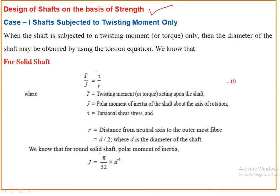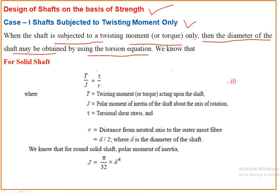The first design criteria is the design of shaft on the basis of strength — specifically, the first case is when the shafts are subjected to twisting moment only. When the shaft is subjected to twisting moment only, the diameter of the shaft may be obtained by using the torsion equation.